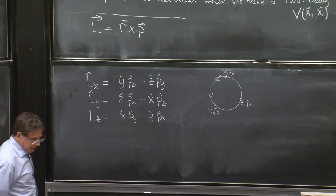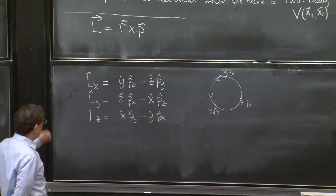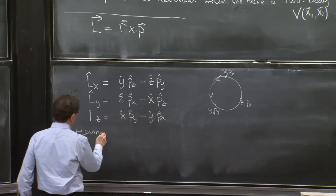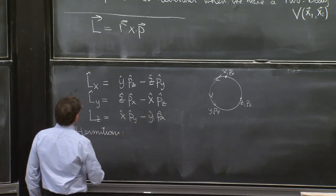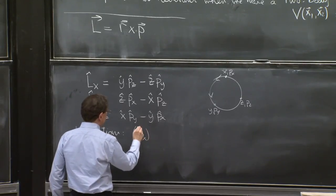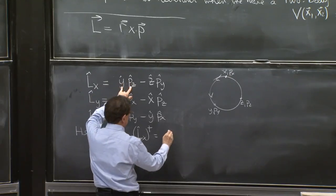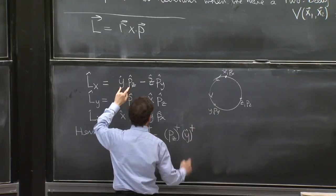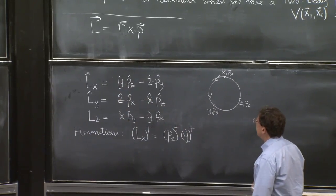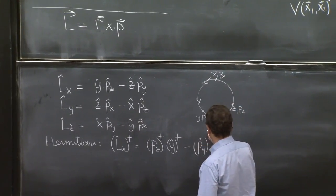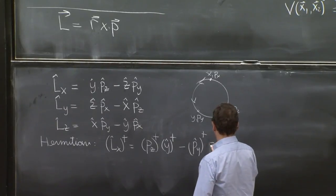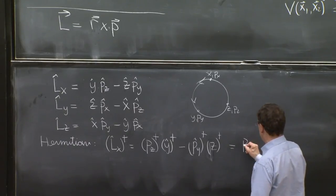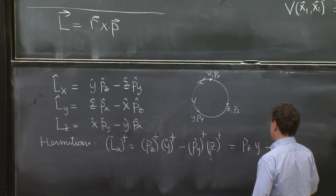But now these are operators. And moreover, they are Hermitian operators. Let's see. Lx dagger. Well, the dagger of two operators, you would do pz dagger y hat dagger. Recall the dagger changes the order, minus py dagger z dagger. Now p and x's are all Hermitian operators. So this is pz y minus py z.